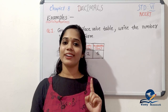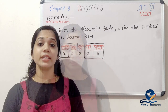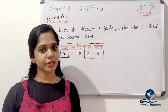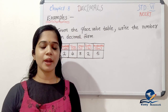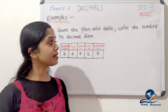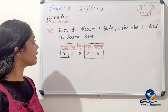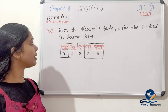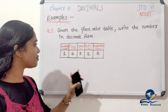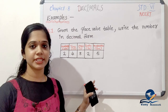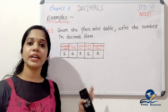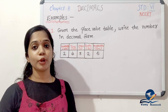So let's start our class. We are going to take a few examples from the textbook. We are going to check the first question: given the place value table, write the number in decimal form. There are a few numbers and we will try to make the decimal form.